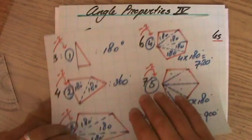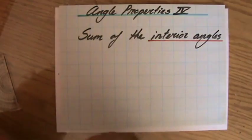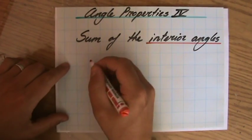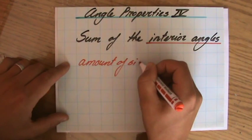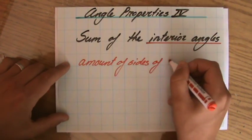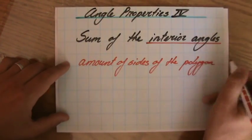Now, coming up with a general formula, we can then say the amount of sides, the amount of sides of the polygon, minus two. Because every time it's two less triangles.